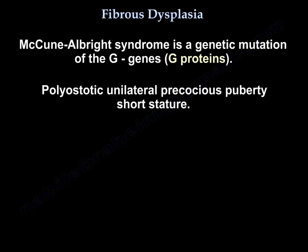McCune-Albright syndrome is a genetic mutation of the G genes. Features include polyostotic involvement, unilateral distribution, precocious puberty, and short stature.